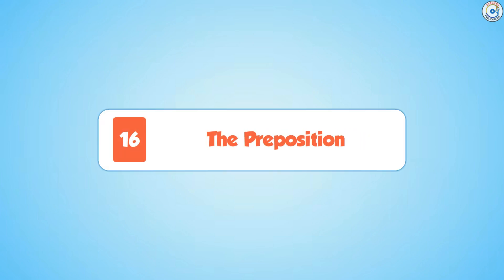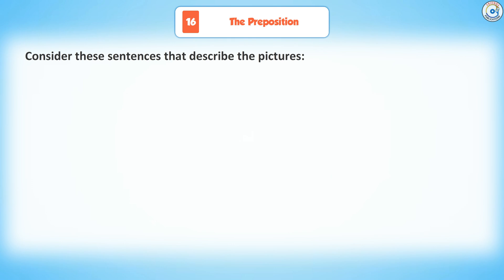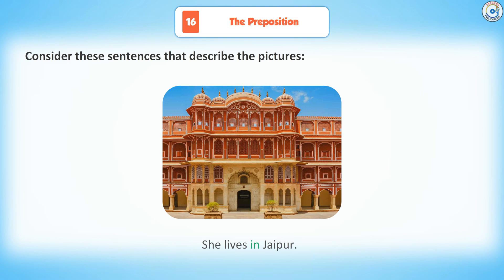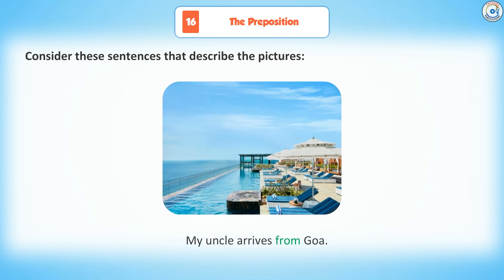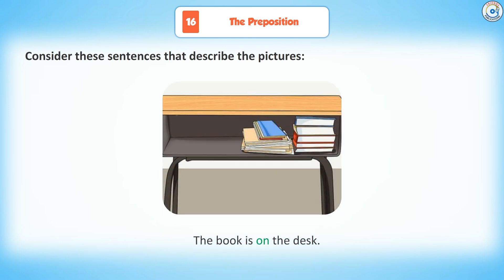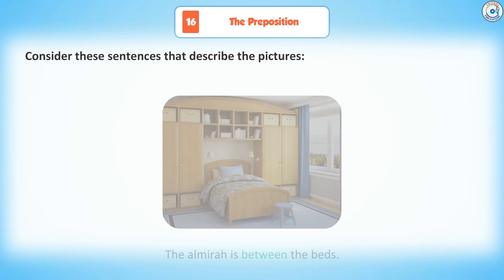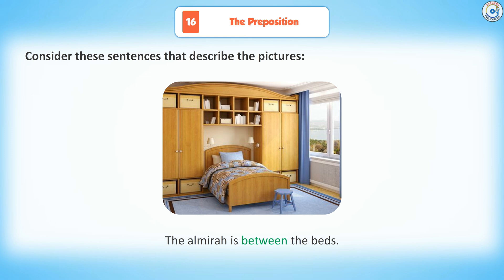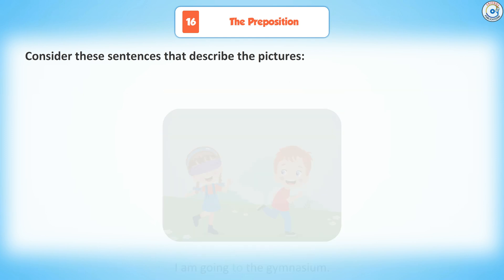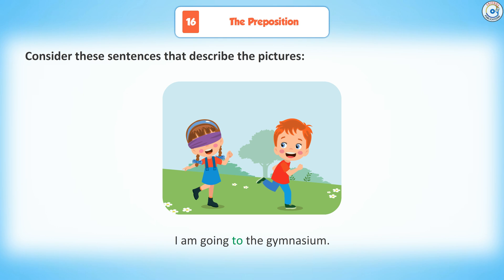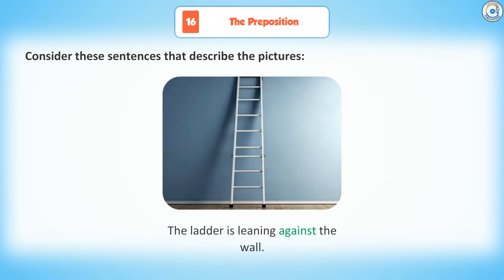Chapter 16: The Preposition. Consider these sentences that describe the pictures. She lives in Jaipur. My uncle arrived from Goa. My book is on the desk. The almira is between the beds. There is a parcel for you. I am going to the gymnasium. The ladder is leaning against the wall.